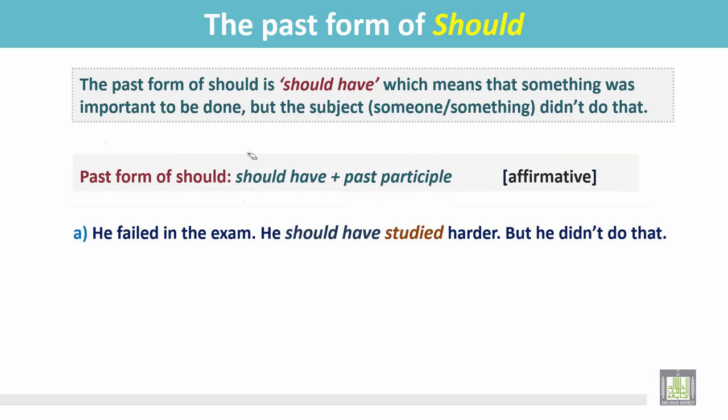Examples. He failed in the exam. He should have studied harder, but he didn't do that. It was very important to study harder, but he failed to do that, and he couldn't pass. Should have is followed by the past participle form of the verb study.